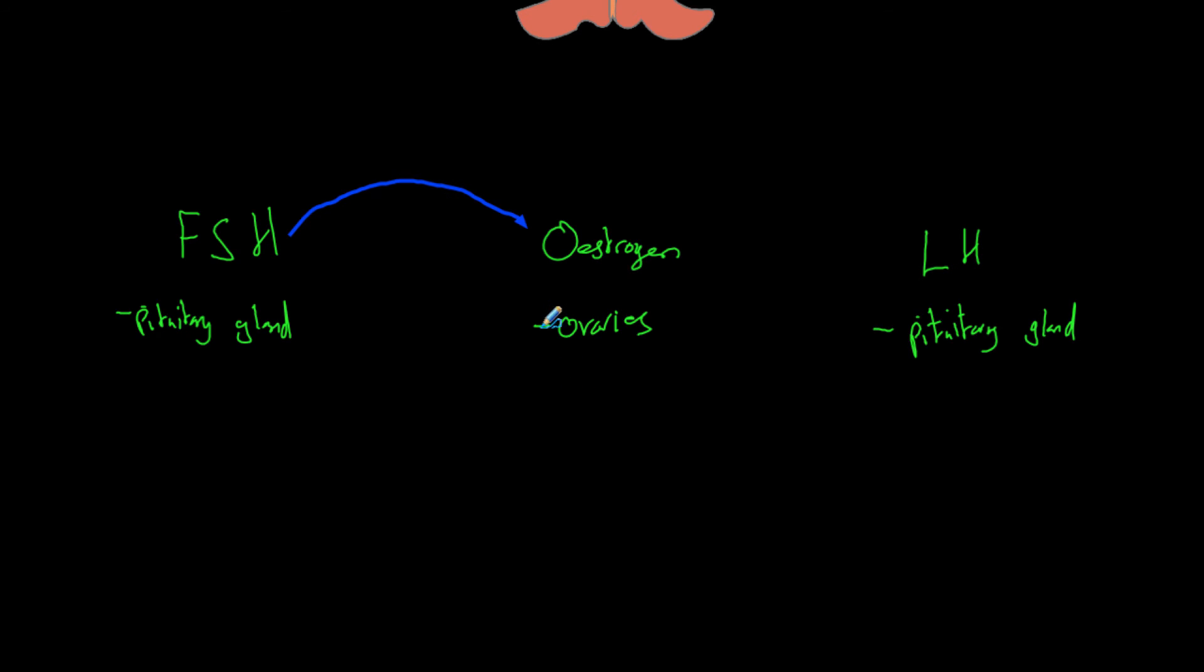Now importantly here, oestrogen also inhibits the production of FSH. Now that sounds a bit weird because FSH makes oestrogen be produced and then oestrogen stops FSH being produced. Reason being, is that we only want to mature one egg every cycle. And so if we allowed FSH to stay in the blood and be there all the time, then we would get loads of eggs constantly being matured. And that is not what we want. So oestrogen will cause FSH to go down.